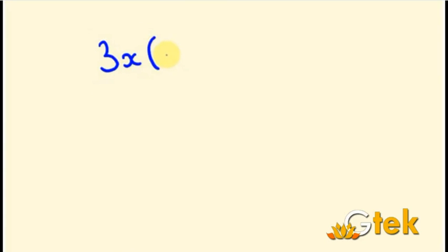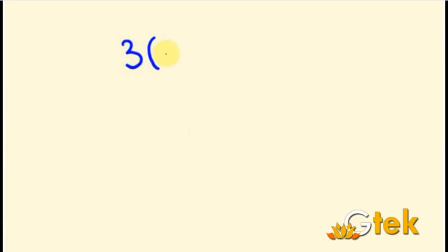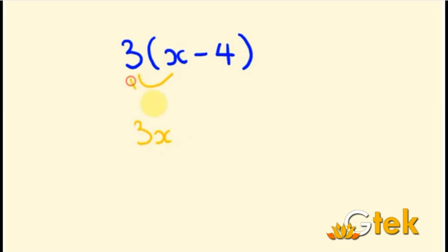Similarly, the next example is 3 open bracket x minus 4. So 3 into x and 3 into 4. So 3 into x is 3x, minus 3 into 4 is 12. So the answer is 3x minus 12.